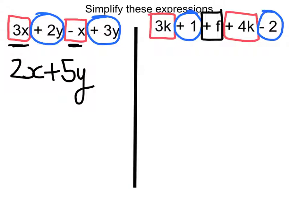So now let's add together the k terms. We've got 3k plus 4k, and that makes 7k.